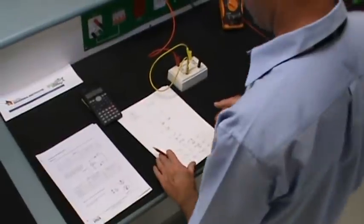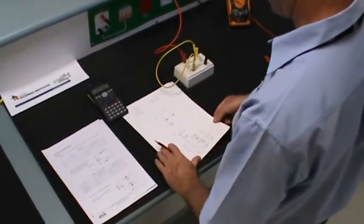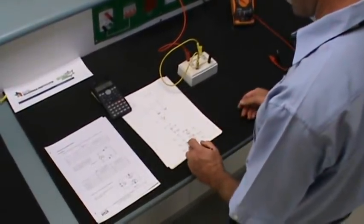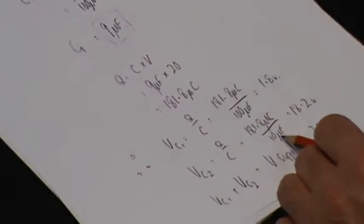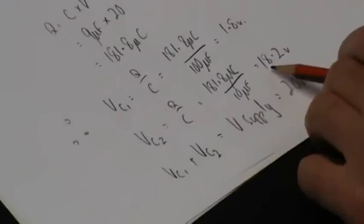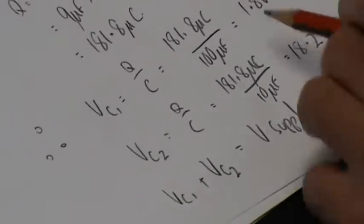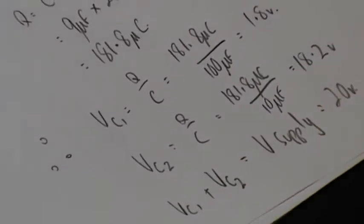The other interesting observation we see there is that the most voltage is dropped across the smallest capacitor. You can see there's 18 volts or thereabouts dropped across the 10 mic, and only 1.8 volts dropped across the 100 mic.